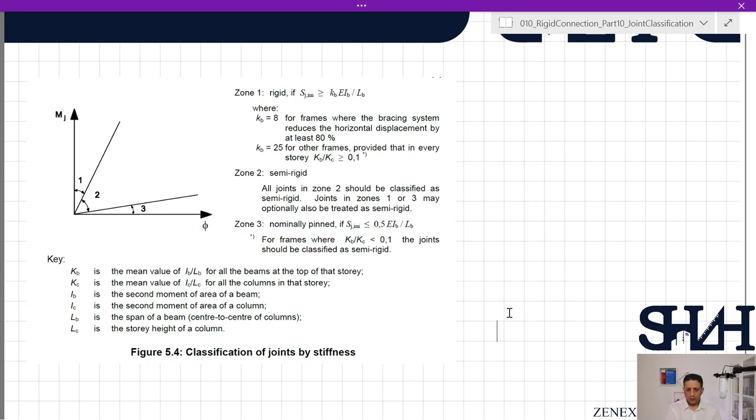Zone number one: if Sj,ini (which we already calculated) is greater than mu times Kb times EIb divided by Lb. Kb is 8 for frames where the bracing system reduces the horizontal displacement by at least 80 percent, so we are not talking about a braced frame in this example. Kb equals 25 for other frames provided that in every story Kb divided by Kc is greater than 0.1.